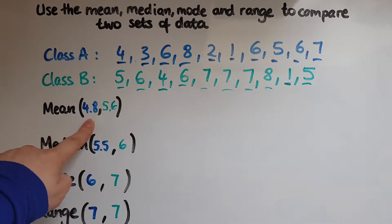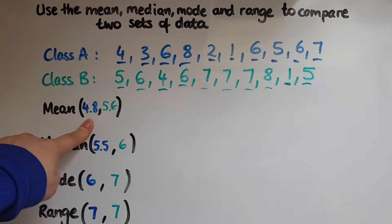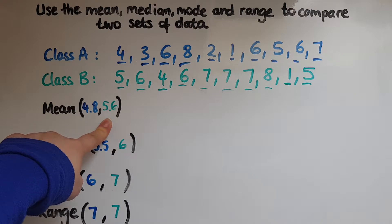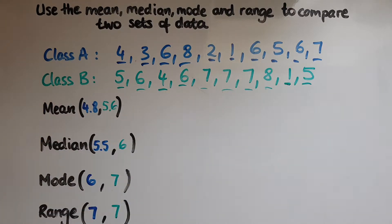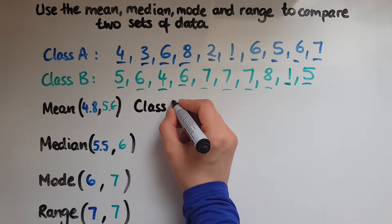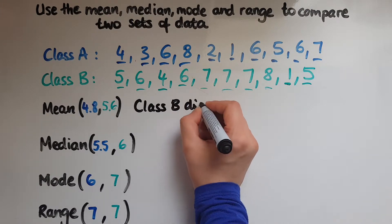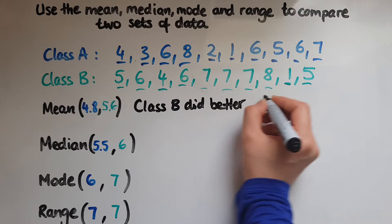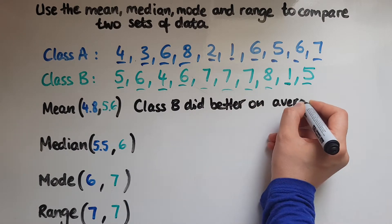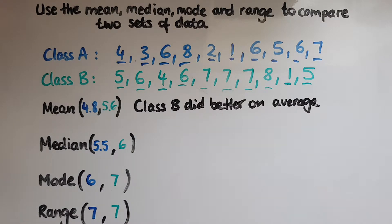As you can see, class A on average scored 4.8 marks, whereas class B scored 5.6 marks. So what does that tell us? Since this is an average measure, the mean, that tells us that class B did better in general. Class B did better on average.